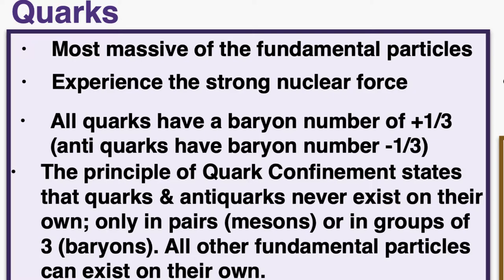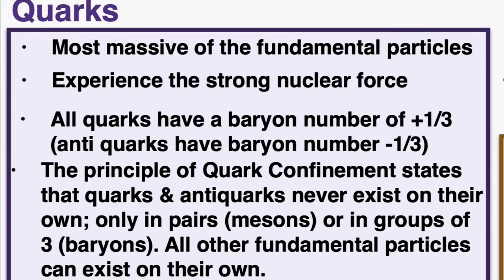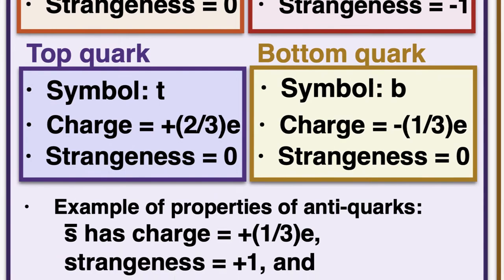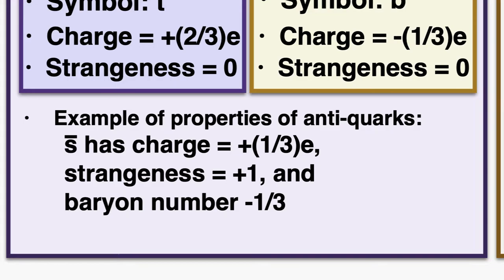There are six types of quarks. Their properties are displayed here, and you won't need to memorize them — they'll be given in your data booklet. The properties of anti-quarks can be understood by simply flipping the properties of the original quarks. One quick example of an anti-strange quark is shown at the bottom.